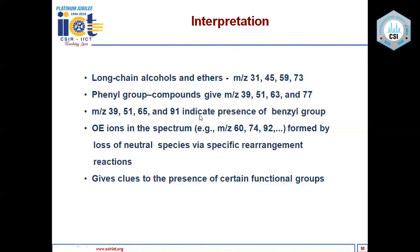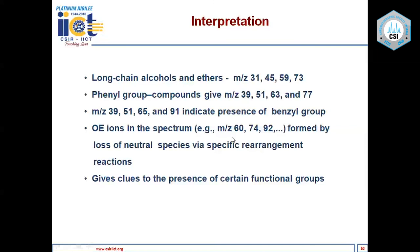Long chain alcohols and ethers show ions at m/z 31 (CH₂=OH⁺), 45, and higher values by addition of successive alkyl groups. Compounds containing a phenyl group show a characteristic series of ions starting from the phenyl cation at m/z 77, as well as m/z 63, 51, and 39. If you observe a peak at m/z 91, it indicates the presence of a benzyl group. If you observe even-mass odd-electron ions in the spectrum at m/z 60, 74, or 92, this indicates specific rearrangement reactions — possibly a McLafferty rearrangement.